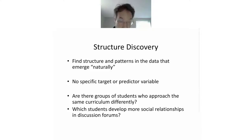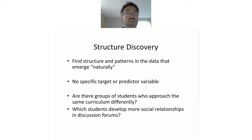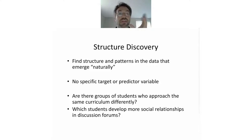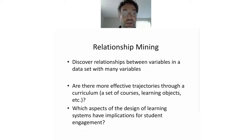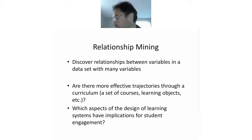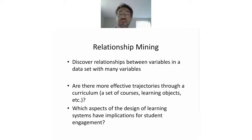The second big category is structure discovery — finding structure and patterns in the data that emerge naturally. Whereas in prediction modeling we're trying to find a specific thing, in structure discovery we're trying to find out what just falls out of the data, with no specific target or predictor variable. For example, if you have a curriculum, are there groups of students who approach that same curriculum differently? Or if you have a discussion forum, which students develop more social relationships there? The third major category is relationship mining — discovering relationships between variables in a data set. For example, if you have a set of courses or learning objects, are there some trajectories that are more effective than others?